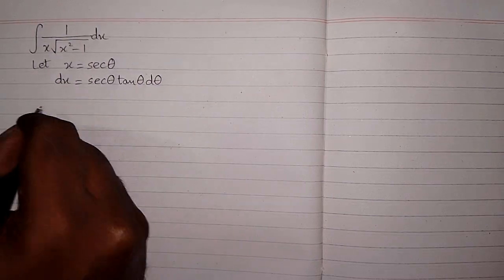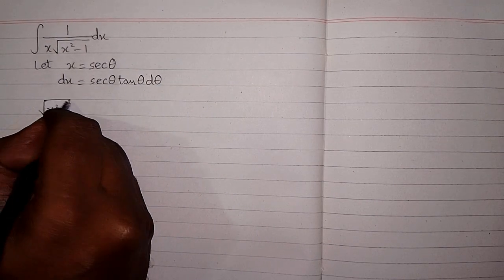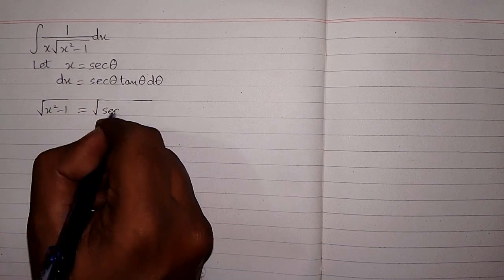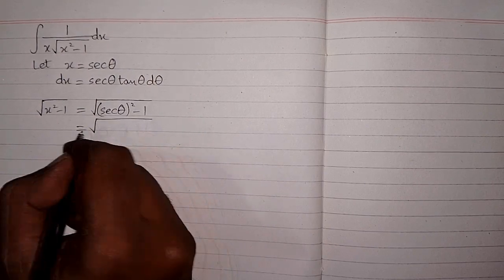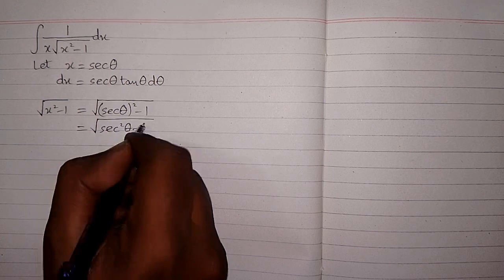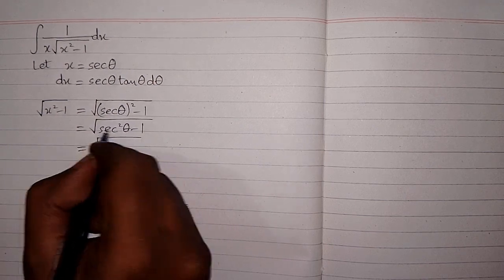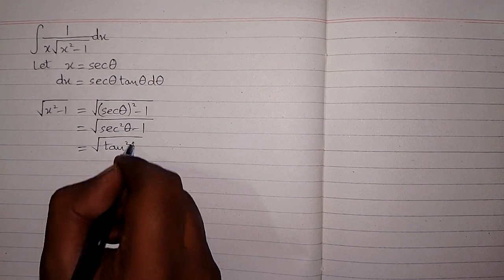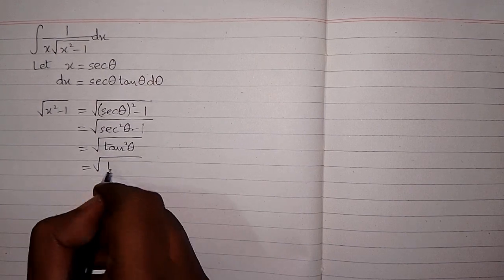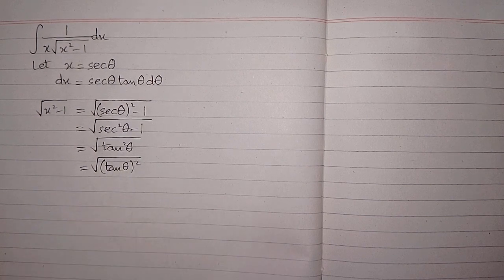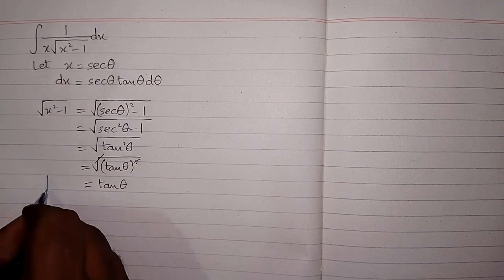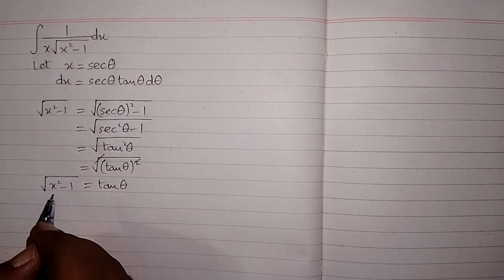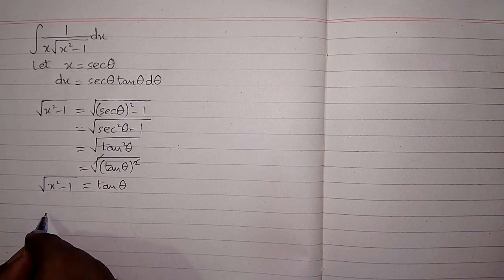Now square root of x squared minus 1: we substitute x = sec θ, giving us square root of sec²θ minus 1. Since sec²θ minus 1 equals tan²θ, this becomes square root of tan²θ, and canceling the square root and the square we get tan θ. So the value of √(x² - 1) is tan θ.